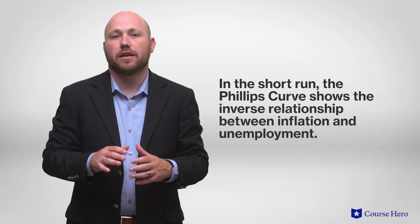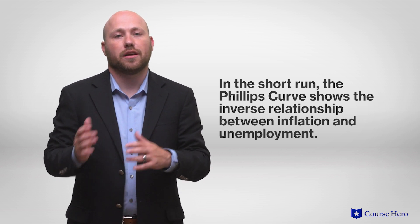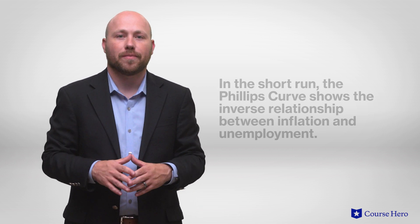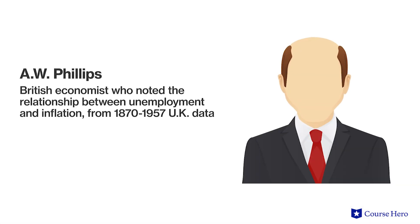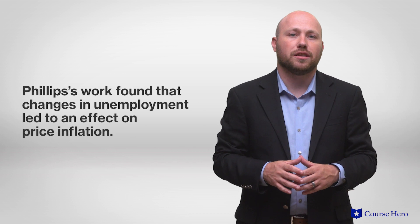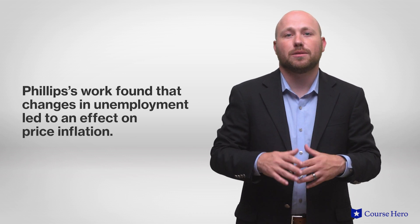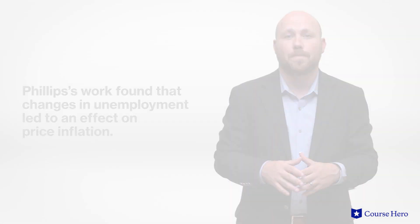In the short run, if the average inflation rate is constant, the Phillips curve shows an inverse relationship between inflation and unemployment. This is the behavior that British economist A.W. Phillips noted in his initial paper, where he analyzed unemployment and inflation data from the United Kingdom from 1870 to 1957. Phillips' work found that changes in the level of unemployment have a predictable effect on the level of price inflation.